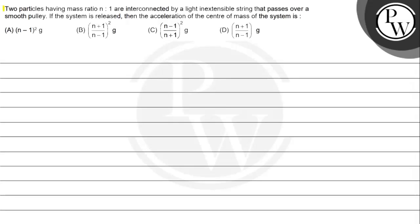The question says that two particles having mass ratio n:1 are interconnected by a light inextensible string that passes over a smooth pulley. If the system is released, find the acceleration of the center of mass. The options are: (n-1)²/(n+1)² × g, n/(n-1)² × g, (n-1)/(n+1)² × g, and (n+1)/(n-1) × g.